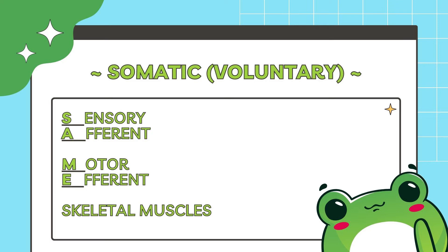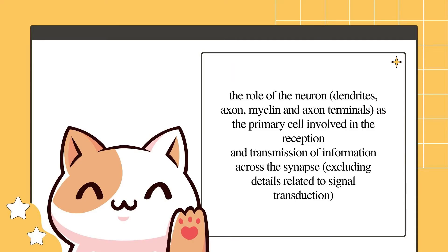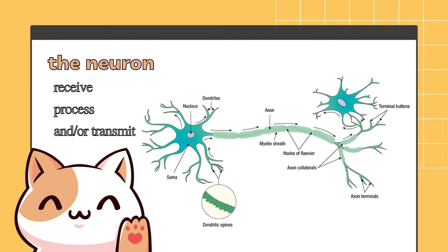The acronym SAME can be used to remember the types of information in the somatic nervous system: sensory information is afferent and motor information is efferent. The next stop point in the study design is the role of the neuron — dendrites, axon, myelin and axon terminals — as the primary cell involved in the reception and transmission of information across the synapse. Neurons receive, process and/or transmit information in the form of action potentials, which are electrical signals that travel across the axon.